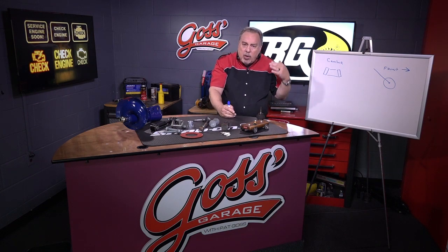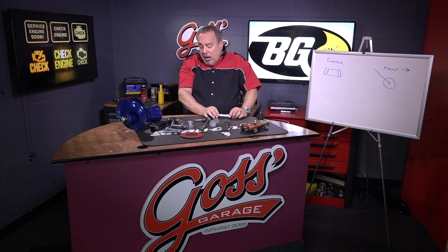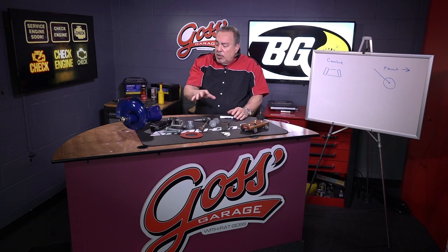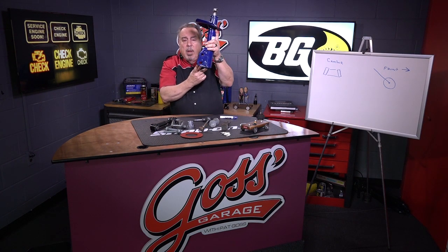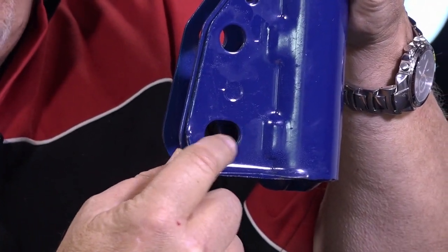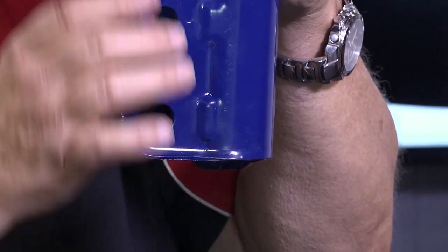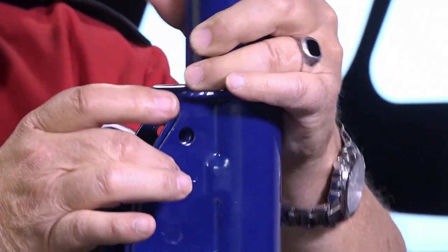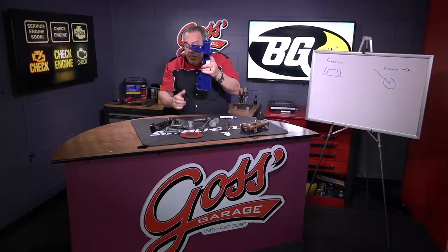So caster, camber, and toe-in — these are the settings. How do we go about adjusting them? Well there are a lot of different ways. When we get a car in that needs to be adjusted, for camber for instance, here we have a modern type strut. If we look down here this is an elongated slot. Up here we have a bolt, down here we have a bolt, and we can pivot on this upper bolt using this slot down here. That's the most common one that we get.